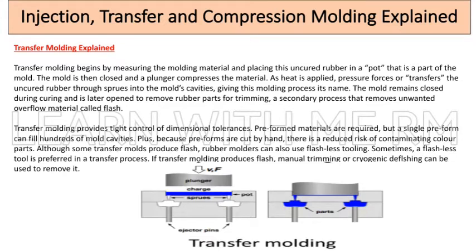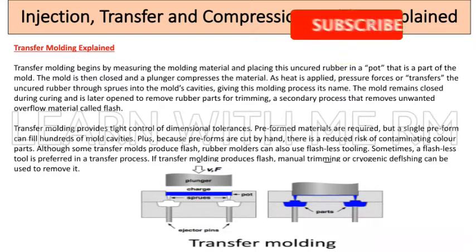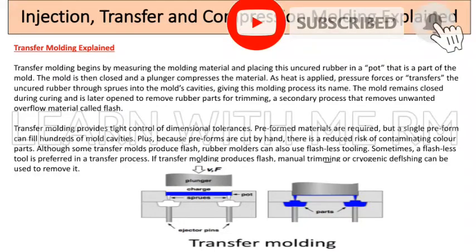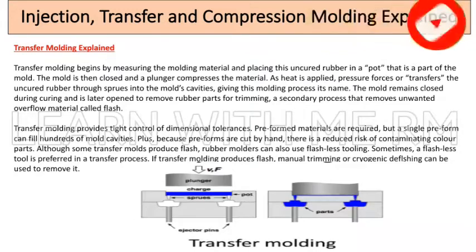The mold remains closed during curing and is later opened to remove rubber parts for trimming — a secondary process that removes unwanted overflow material called flash.